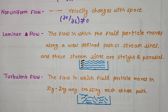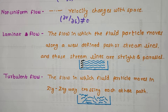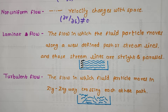The third type of flow is laminar flow and turbulent flow. Laminar flow is the flow in which fluid particles move along a well-defined path or streamline, and those streamlines are straight and parallel. The particles have a definite path and those paths do not cross each other. In the diagram you can see four different parallel paths along which particles move.